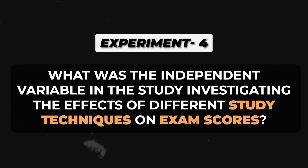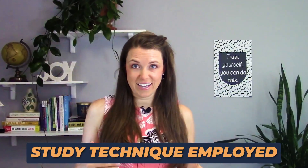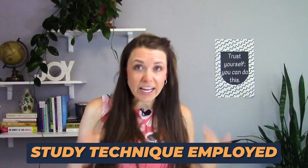What was the independent variable in the study investigating the effects of different study techniques on exam scores? Which one can I change — exam scores or study techniques? I can't change the exam scores directly; that's basically just what happens based on how I study. So my study techniques are what I change, making that the independent variable, and my exam scores would be the dependent variable.